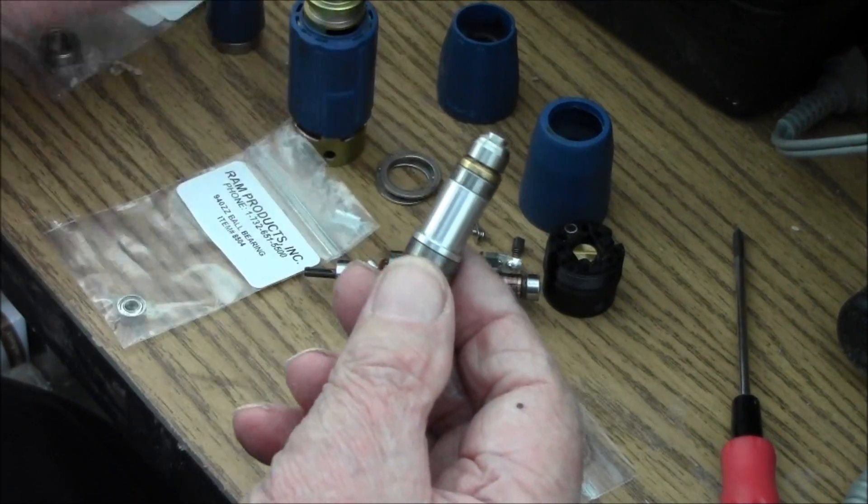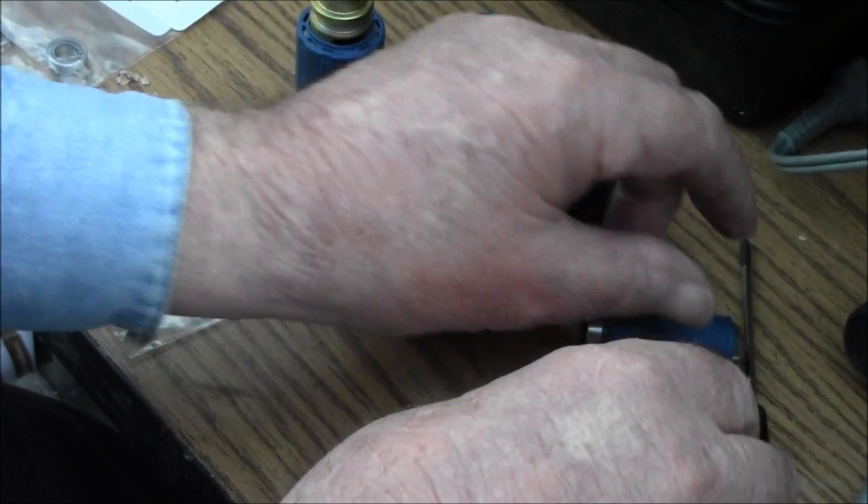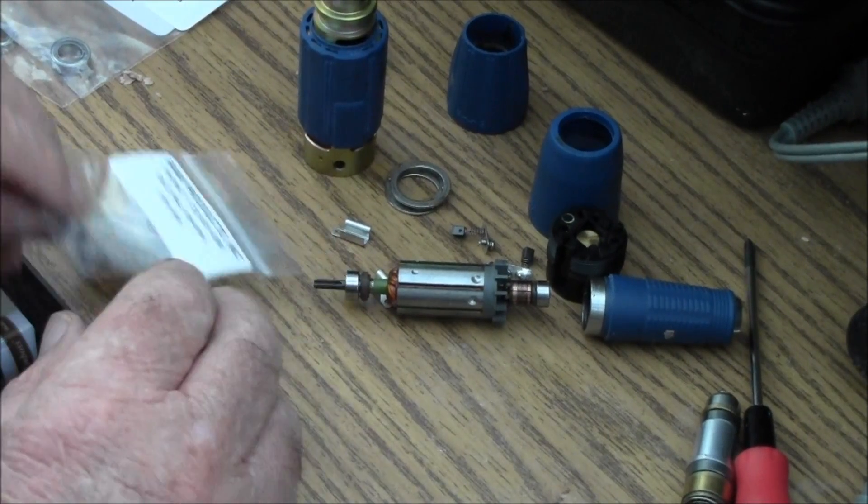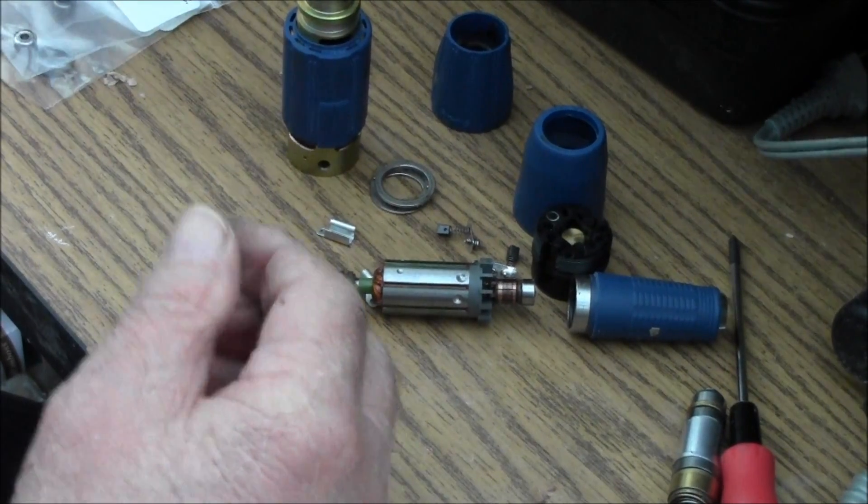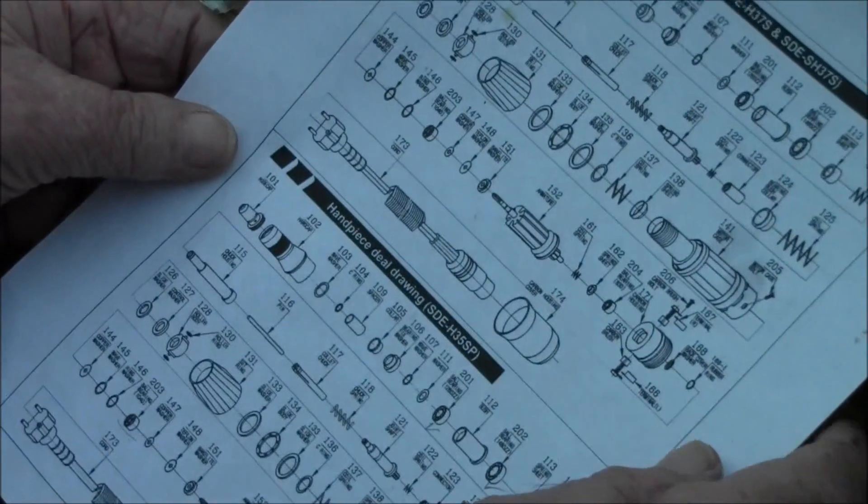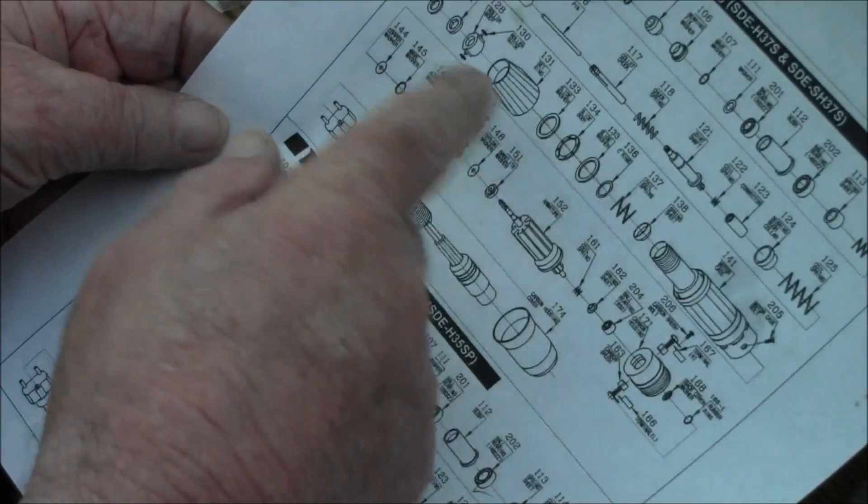And all this goes back together, goes up in the nose piece. The only thing that I did find, I mentioned the printout. Here's a printout showing you the assembly order of the handpieces.